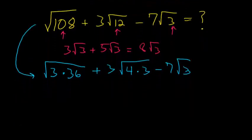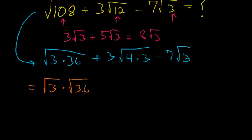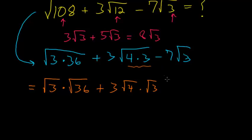Now we can rewrite the expression. Since we have a product underneath the square root sign, we can break it up into two separate square roots. So the square root of 3 times 36 becomes the square root of 3 times the square root of 36, plus 3 times the square root of 4 times the square root of 3, and this is all minus 7 times the square root of 3.